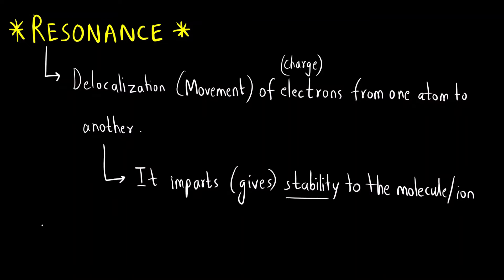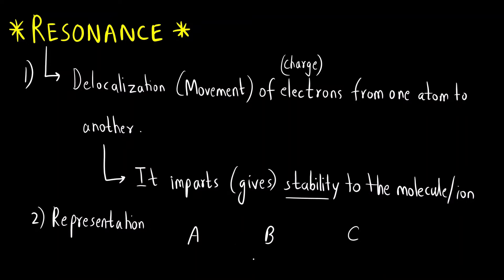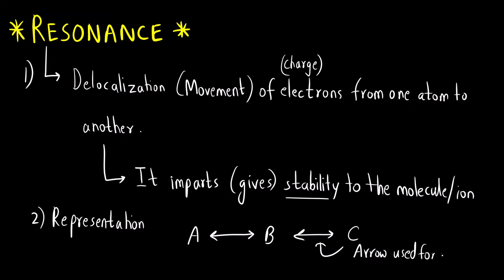Now, how do you represent resonance structures? Suppose there are three resonance structures A, B, and C. You use a single arrow with two heads — a double-headed arrow. This is the arrow used for writing resonance structures, and you have to remember this.